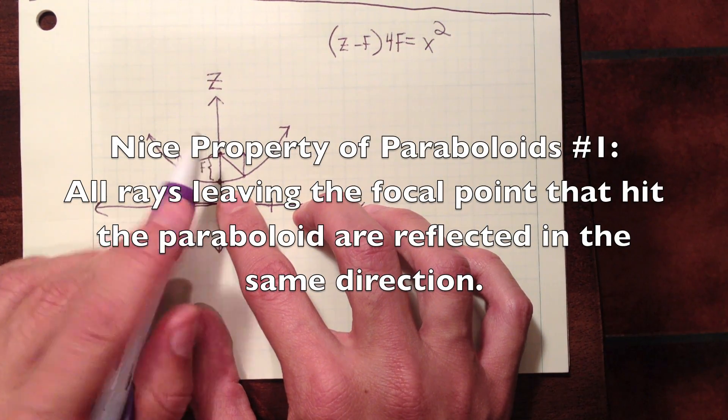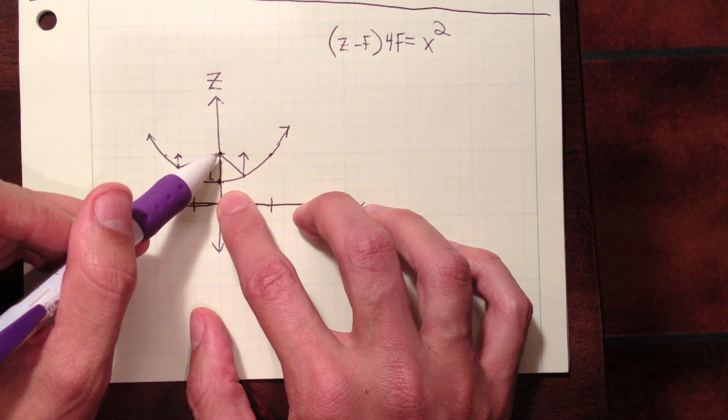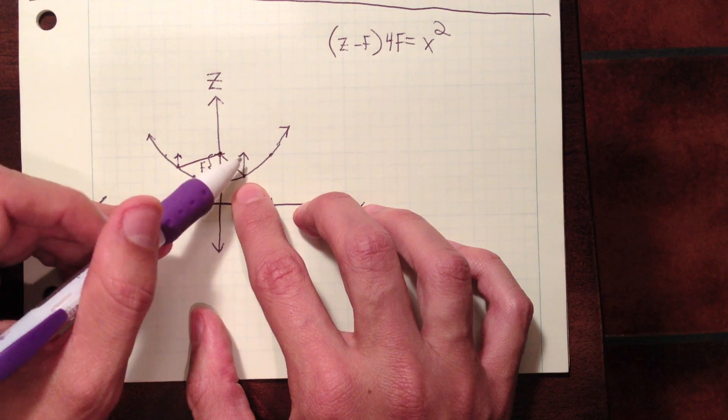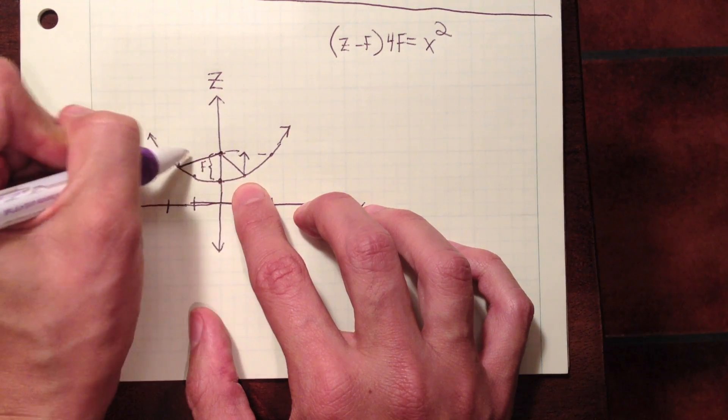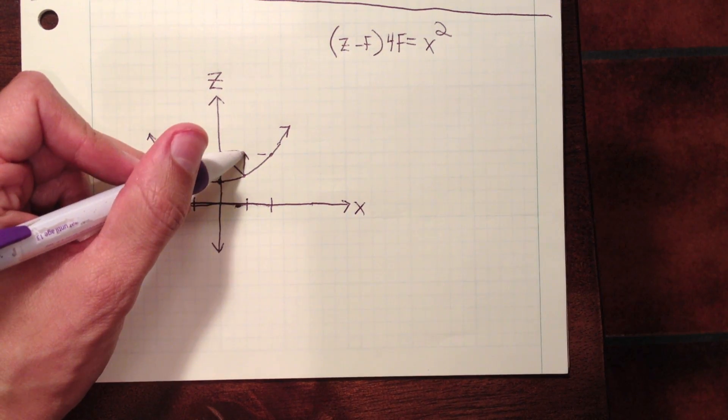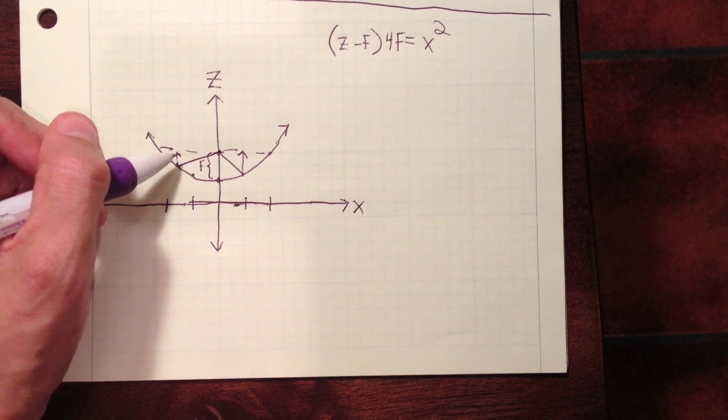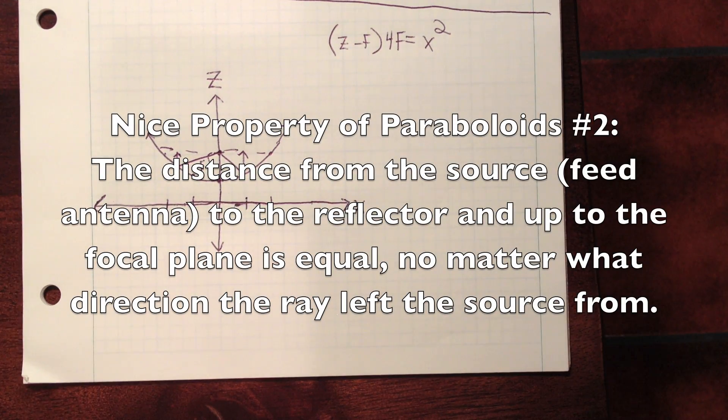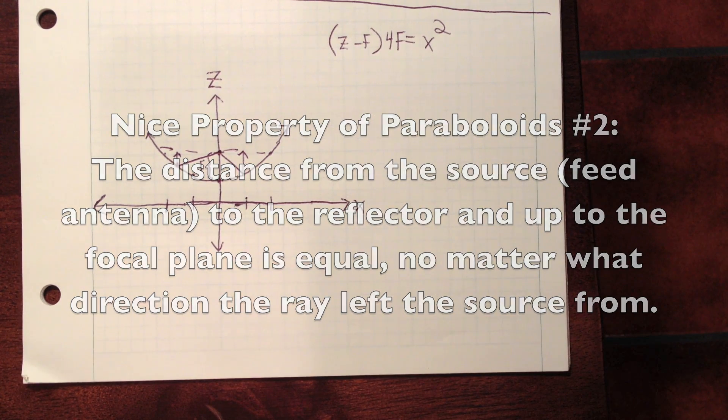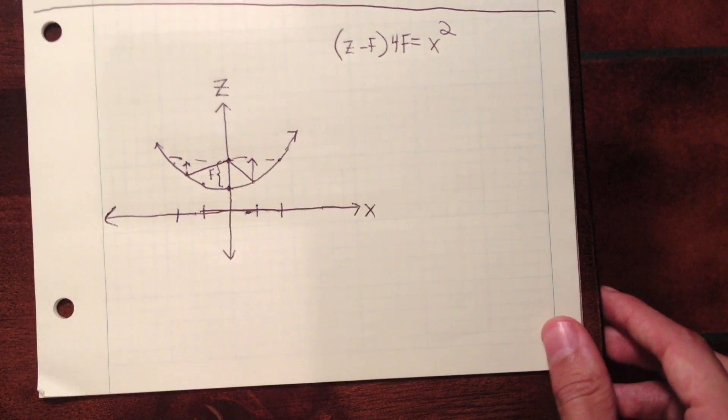So now we have all the energy traveling in the same direction. The second is that the distance from the source to the reflector and to this focal plane here is always a constant. So that means the distance from here to here, up to here is the same as the distance from here to here and up. And so this means that all of our energy is now adding in phase and going in the same direction, so we're not going to get a bunch of cancellation. And these are two very desirable properties and the reason that we use paraboloid reflectors for the dish antenna.